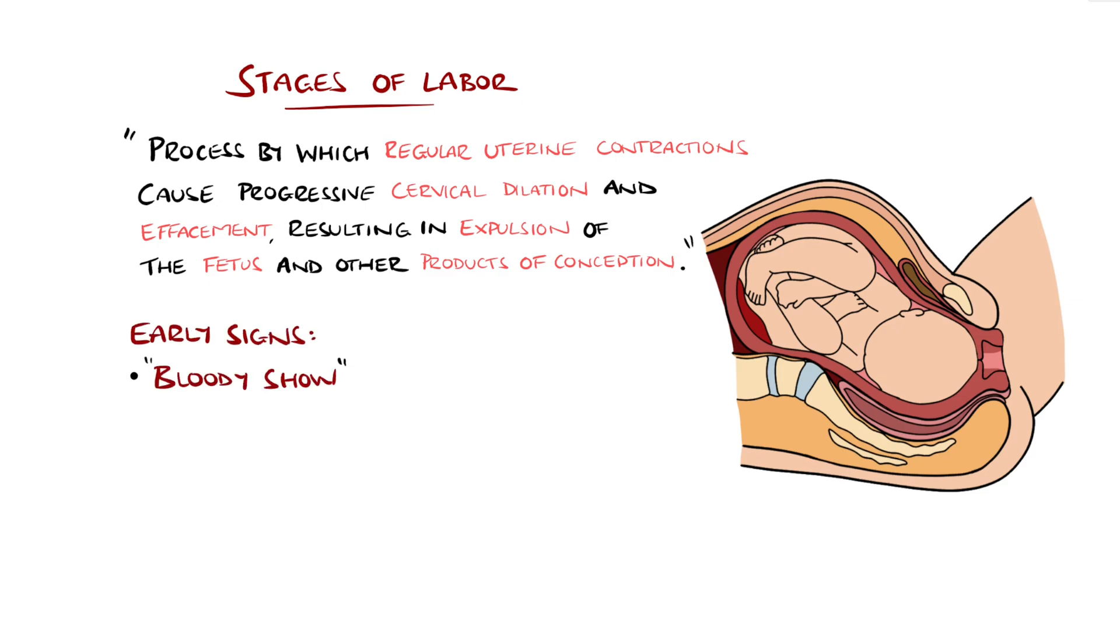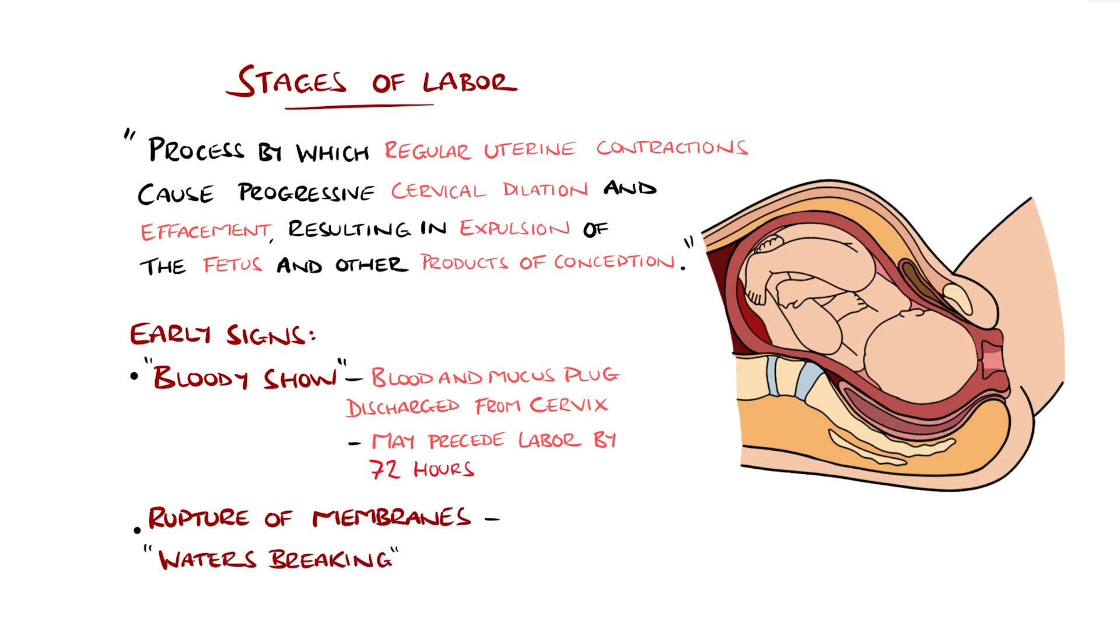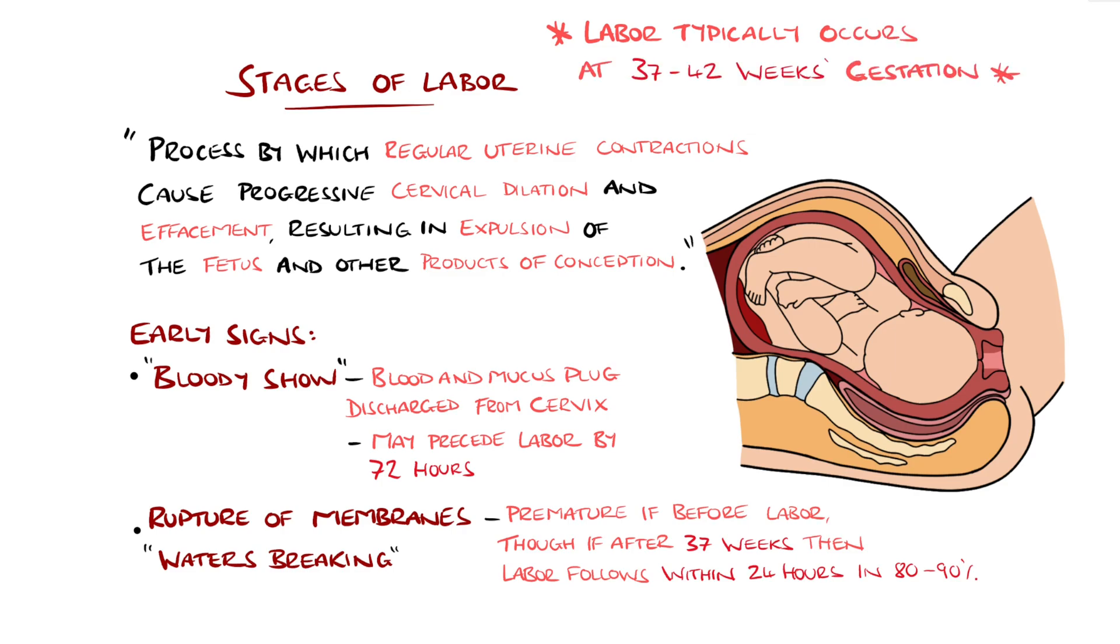Some early signs that labor is beginning include the bloody show, which is a small amount of blood mixed with mucus discharged from the cervix, and may precede labor by as much as 72 hours. Waters breaking, also known as rupture of membranes, can occur before labor begins, termed premature rupture of membranes, though if this occurs at 37 weeks of gestation or later, 80-90% of these cases will begin labor within 24 hours. Labor typically begins between 37 and 42 weeks of gestation.